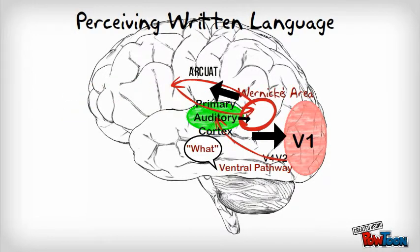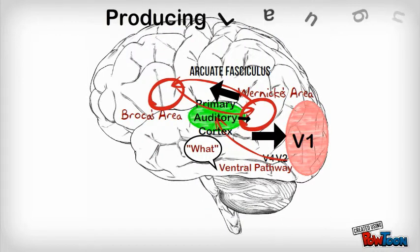When reading words, you say them to yourself in your head. This is when they are transferred from the what pathway to the auditory cortex. The words then go through the same steps that spoken words do.